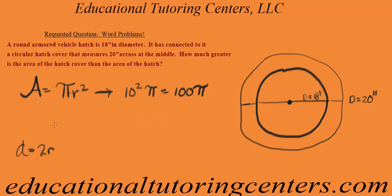And then for the hatch, which is 18, so this is for the cover. And then my area for the hatch is equal to half of the diameter, which is 18, so that will be 9. So that's 9 squared times pi.